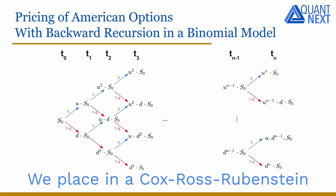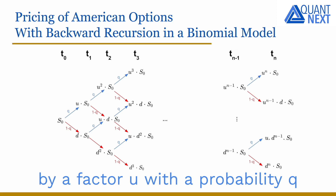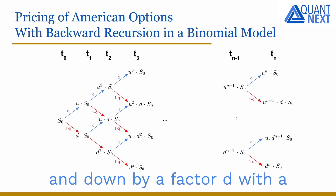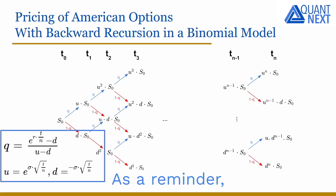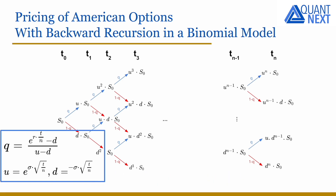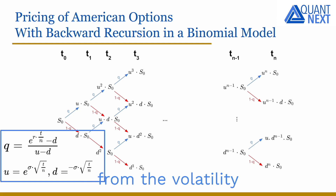We place ourselves in a Cox-Ross-Rubinstein binomial model. The underlying asset price can go up by a factor U with a probability Q, and down by a factor D with a probability 1-Q. As a reminder, in a binomial model, the risk-neutral probability Q has the following expression, and the upward and downward factors U and D are determined from the volatility sigma of the underlying asset price.